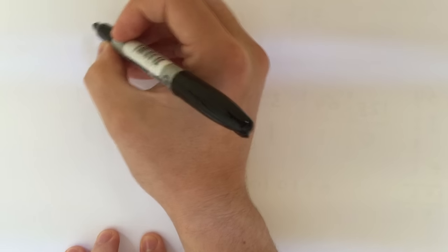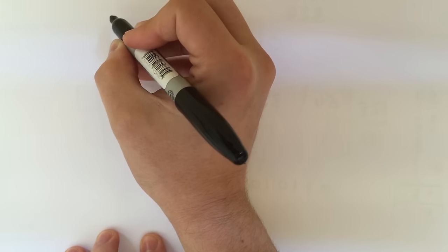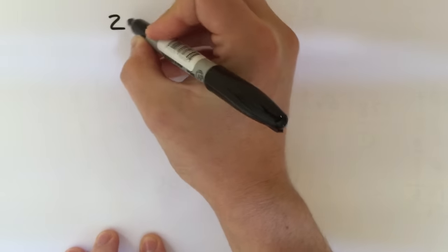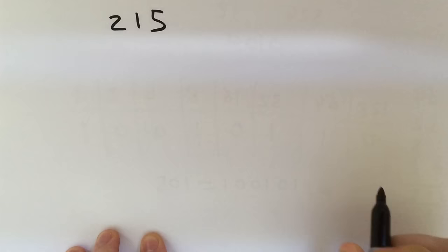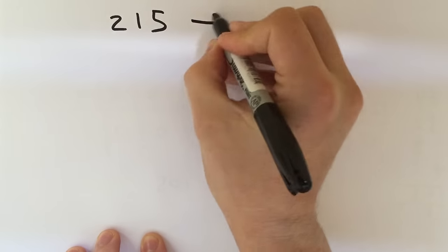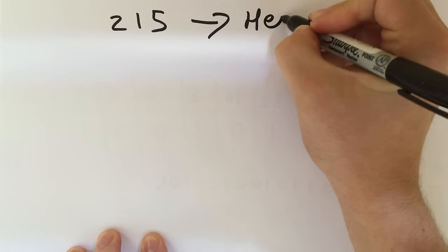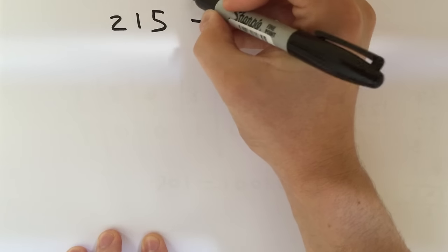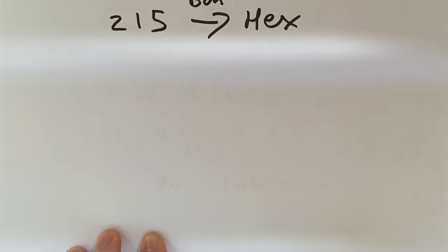So I'm going to start off with a denary number. Let's make one up. Let's say 215. And I would like to convert that into a hexadecimal number. But to do that, I'm going to convert it as an intermediary into a binary number. And that's what I'm going to do as my first step.